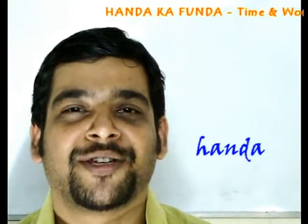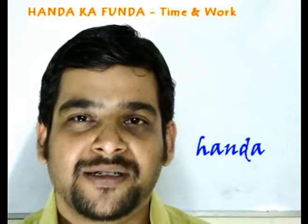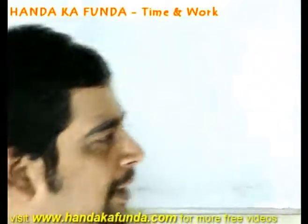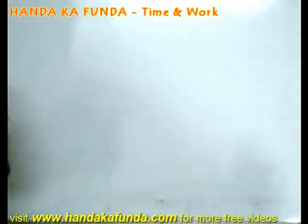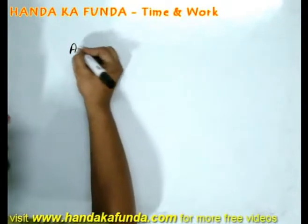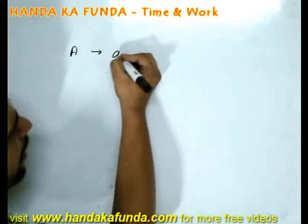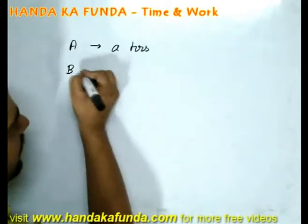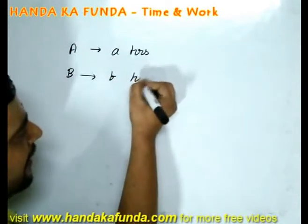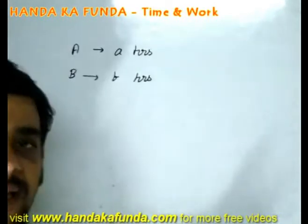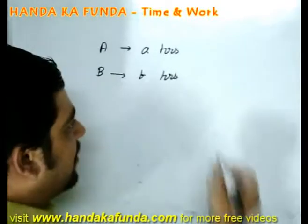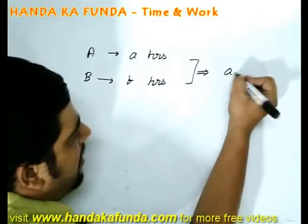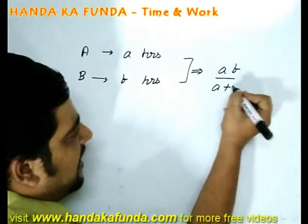Hello and welcome to the session on time and work, brought to you by Handa Ka Fanda. What we need to understand especially is: suppose A does some amount of work in A hours, B does the same amount of work in B hours, then together how much time will they take? Together, the time they are going to take is AB divided by A plus B hours.